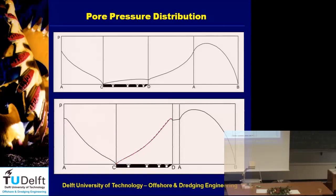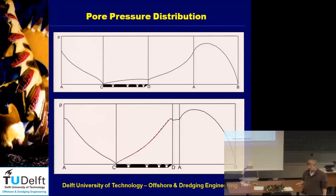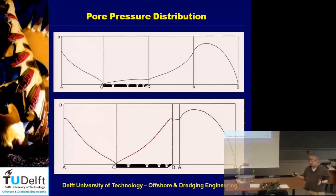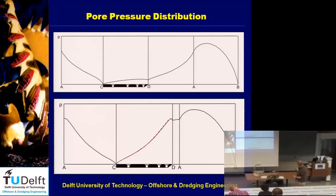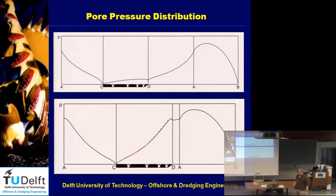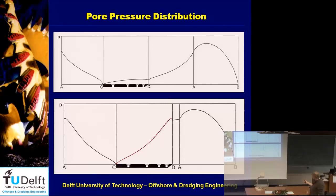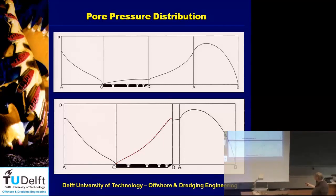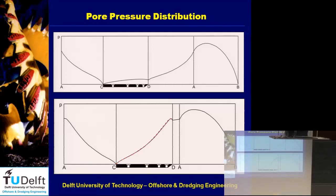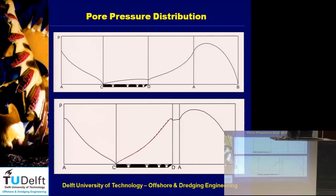This picture shows under-pressure as a function of location. Point B is where the shear plane reaches the surface — the hydrostatic pressure, starting at zero. Point A is the tip of the wedge. From B to A is the shear plane — pressure increases, reaches a maximum, then from A to D, the bottom of the wedge, it decreases almost linearly. Point D is the tip of the blade. From C to A is the top of the blade to the tip of the wedge. We have four planes in total.